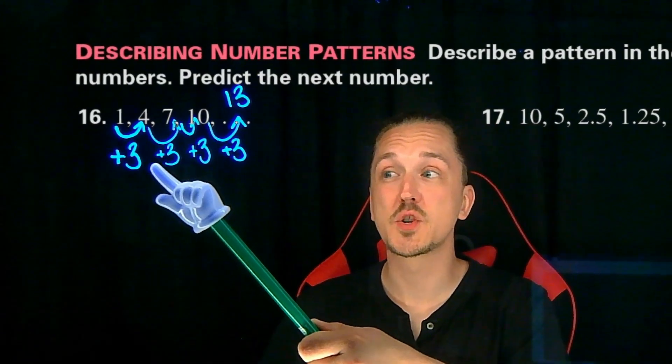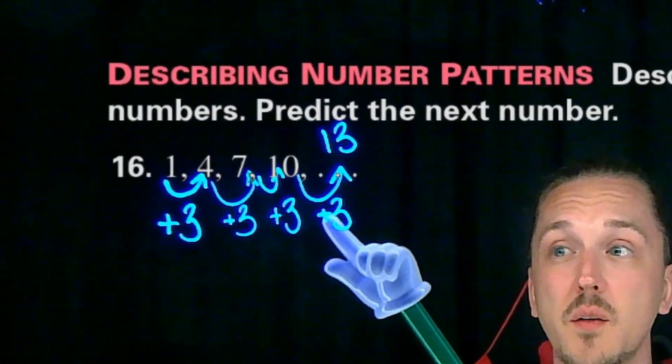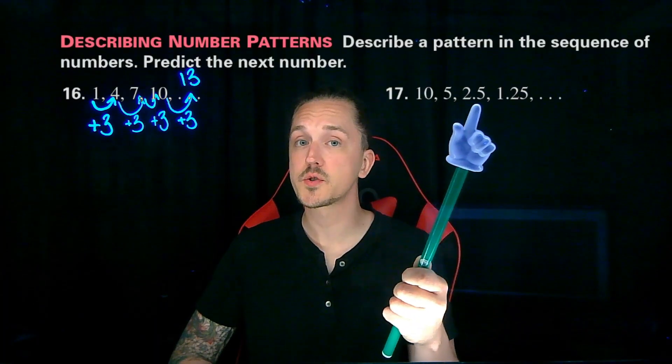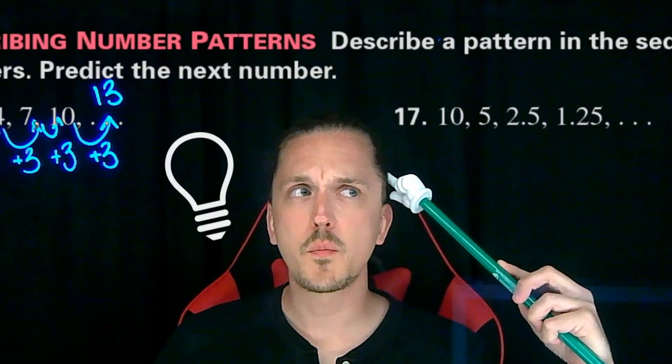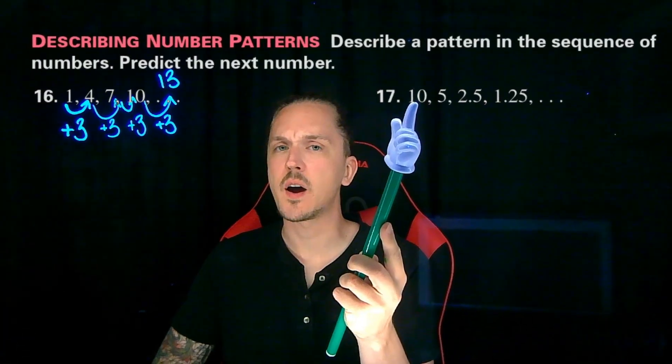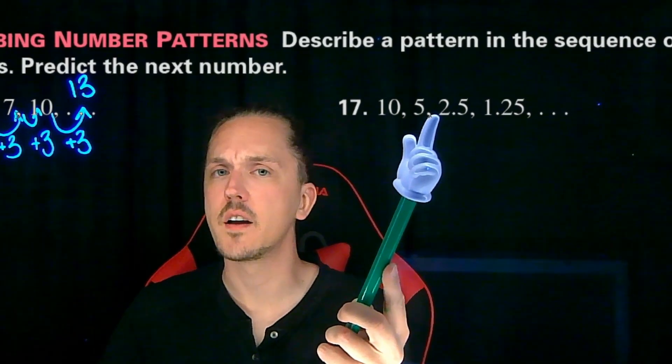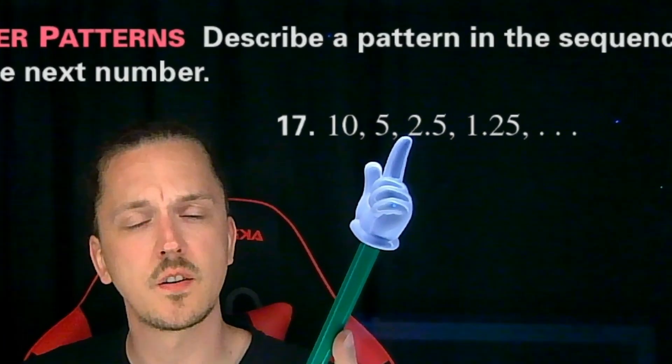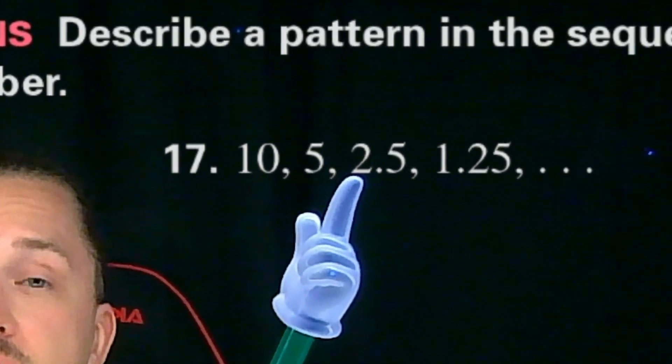Unlike our last pattern, which went up by 3 each time, this pattern's numbers are going down. So you might check subtraction. Let's see. Going down from 10 to 5 is a subtraction of 5, or minus 5.